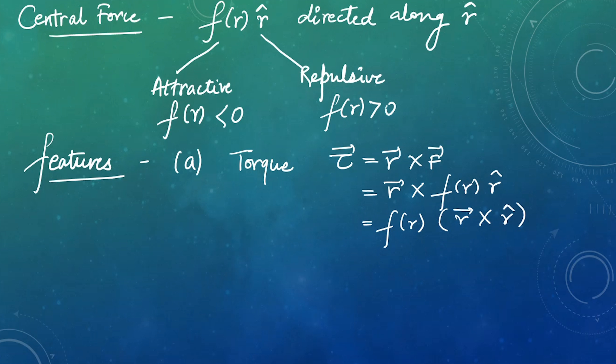R cross R hat, these are the same vector, so this will be zero. So our torque will be zero. A particle under the influence of the central force will experience zero torque. We know this torque can be written as the change in angular momentum with time. So if our torque is zero, that means our angular momentum is constant.